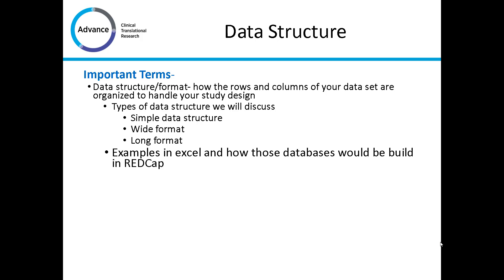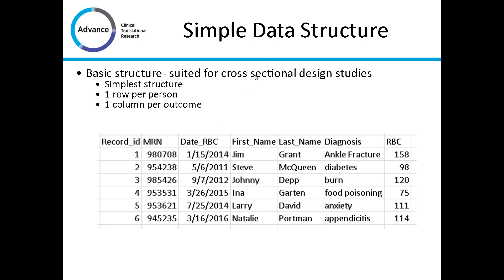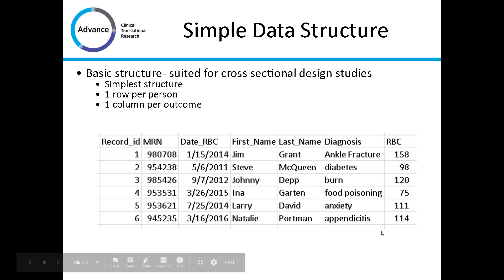We'll look at examples in Excel and how those databases would then be built inside of REDCap. A simple data structure is usually suited for cross-sectional study designs — it's the simplest structure. We have one row per person and one column per outcome. In this example, we have record ID, and each record ID is associated with one person and one outcome, in this case red blood cell count or the date of the red blood cell count.